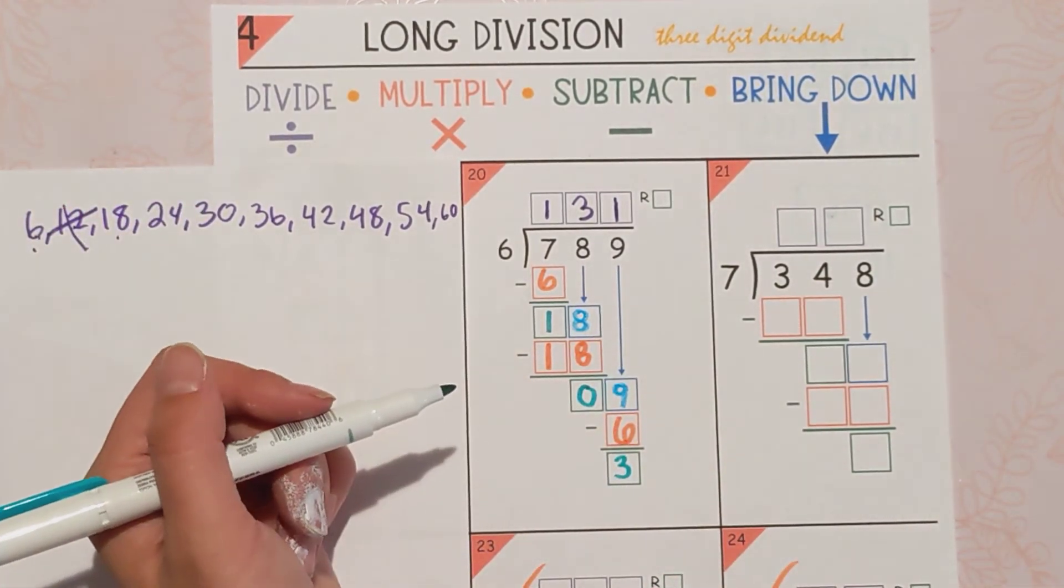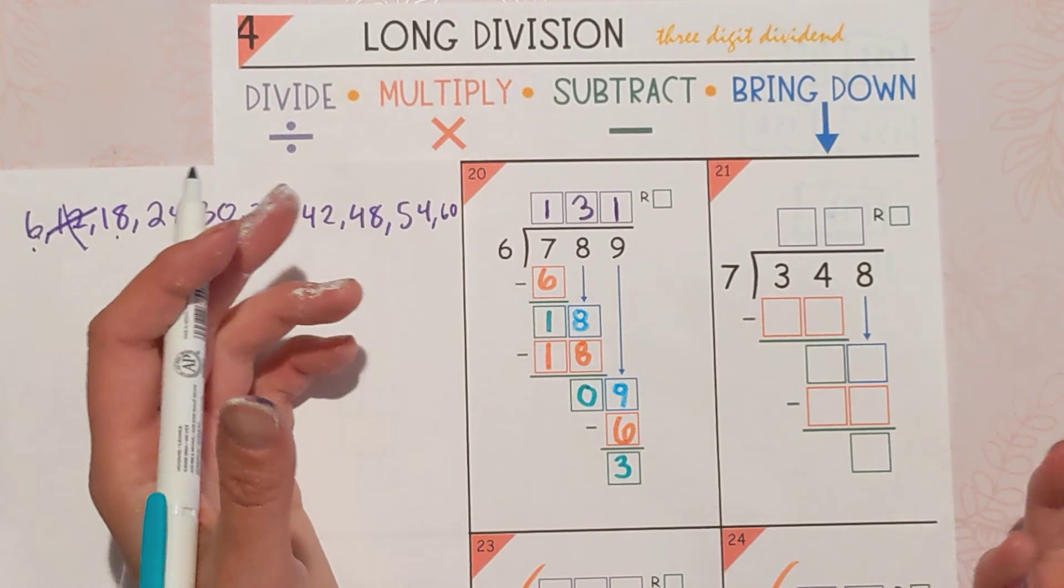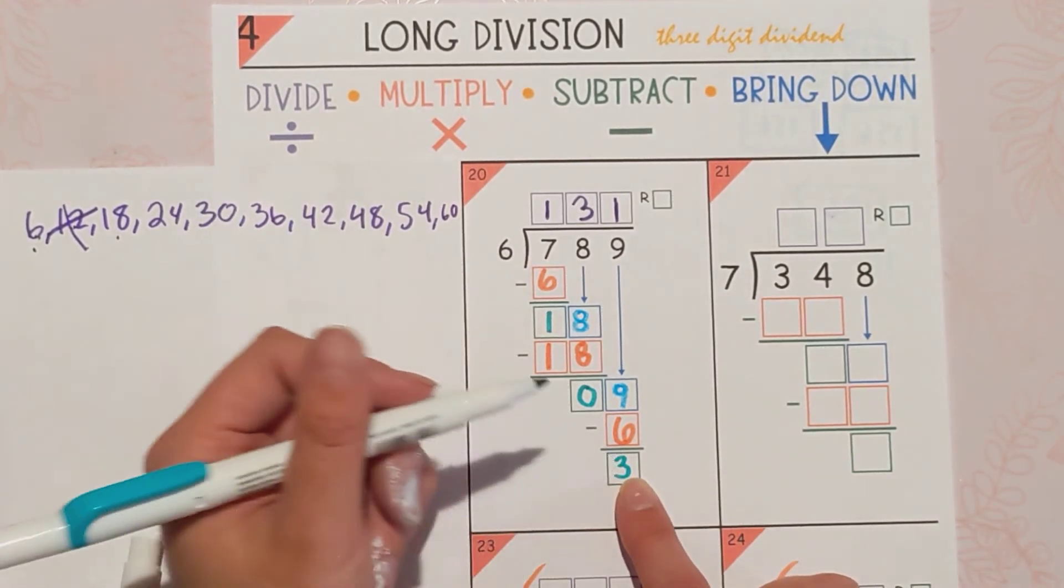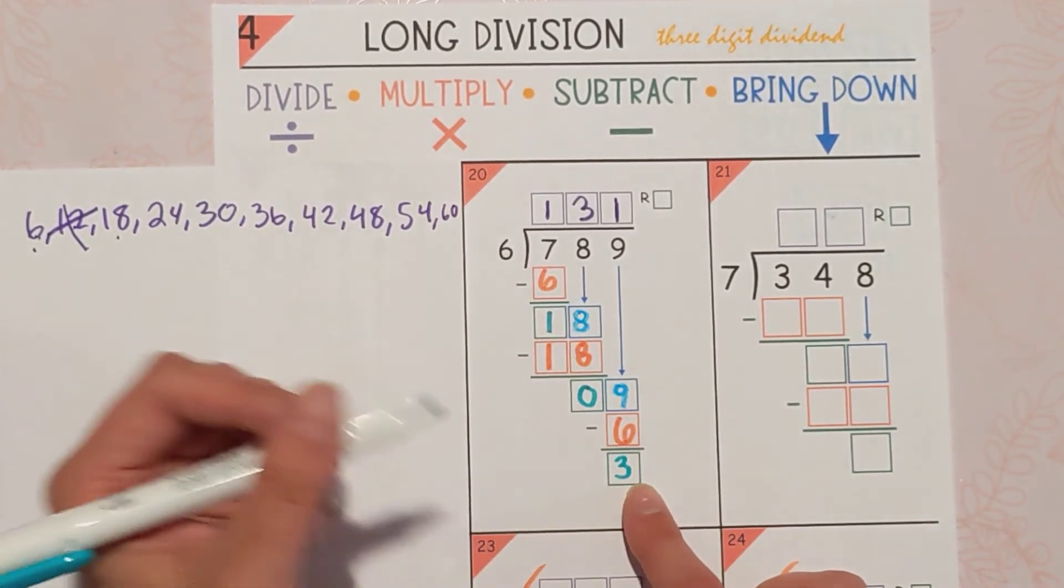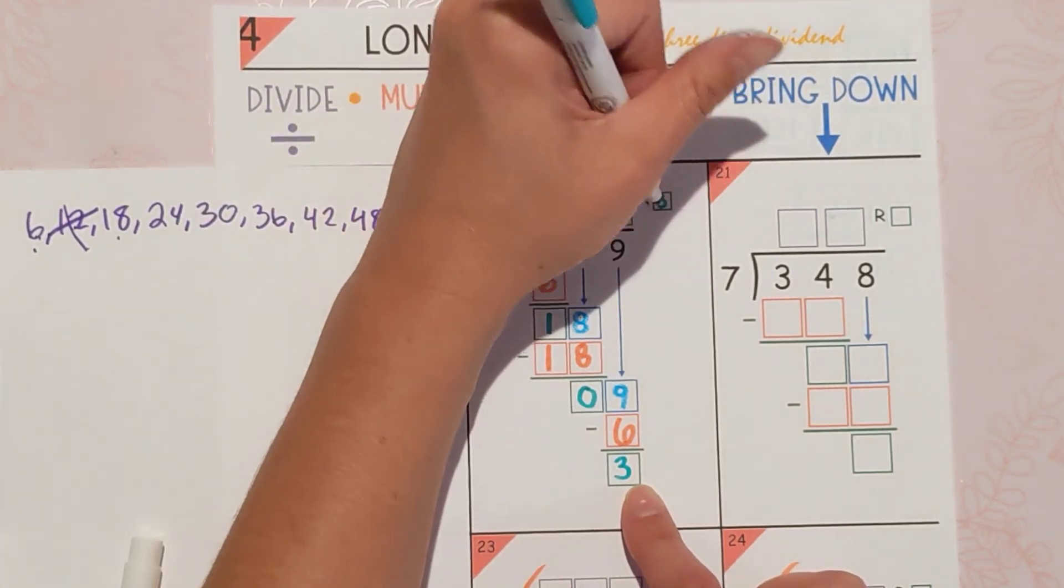Is there anything left to bring down? No, there isn't. Is there anything left over? Yes, there is. There's a 3 left over. Think about where that goes. The 3 goes up here in the remainder box.